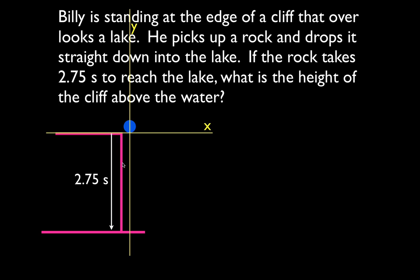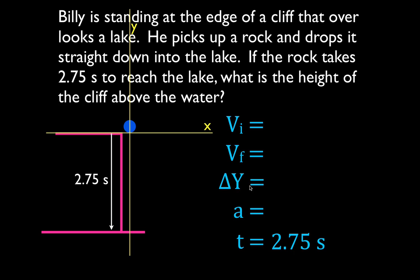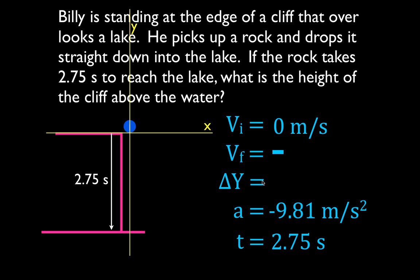The next thing I like to do before getting out a kinematic equation is to write down all 5 variables: initial velocity, final velocity, change in position, acceleration, and time. Now I fill in what I know and what I don't know. We're given explicitly that the time it takes for the object to fall is 2.75 seconds. This is free fall — you're dropping the object, so the initial velocity is 0 meters per second. Because it's free fall, the acceleration is g = 9.81 m/s² — a constant on Earth — and since it's falling in the negative direction, I put a negative sign: -9.81 m/s². We're not given the final velocity, and we're looking for the change in position.